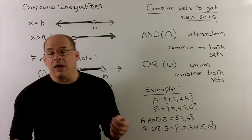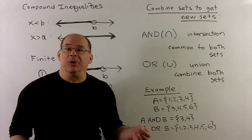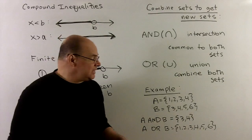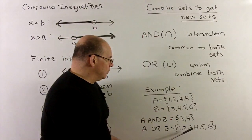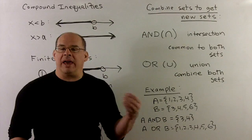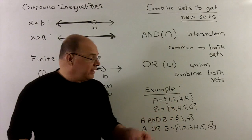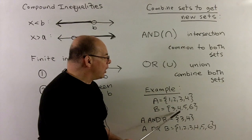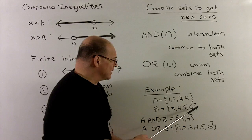On the other hand, for A OR B — the union of A and B — we just take A: {1, 2, 3, 4}, and then add in everything from B that's not already there. So we add in the 5 and the 6, giving us {1, 2, 3, 4, 5, 6}.